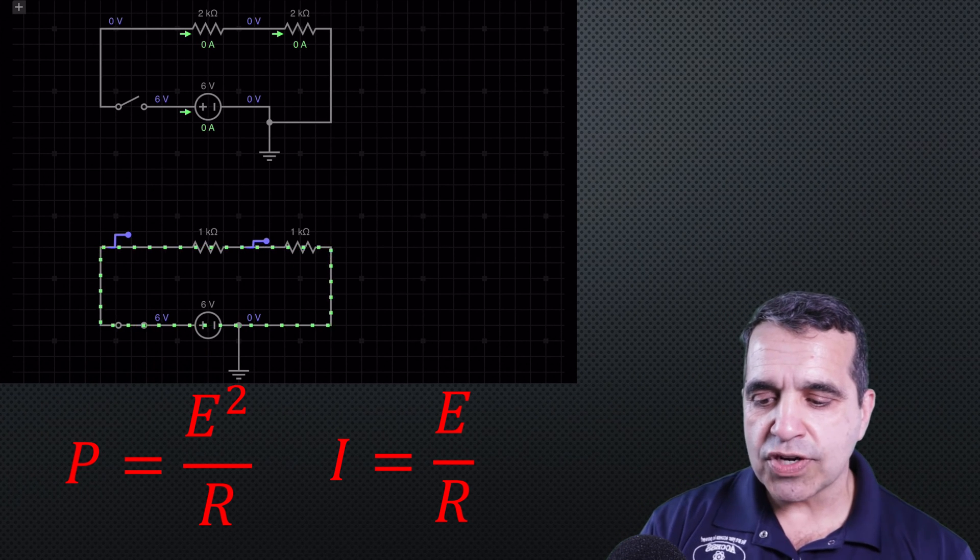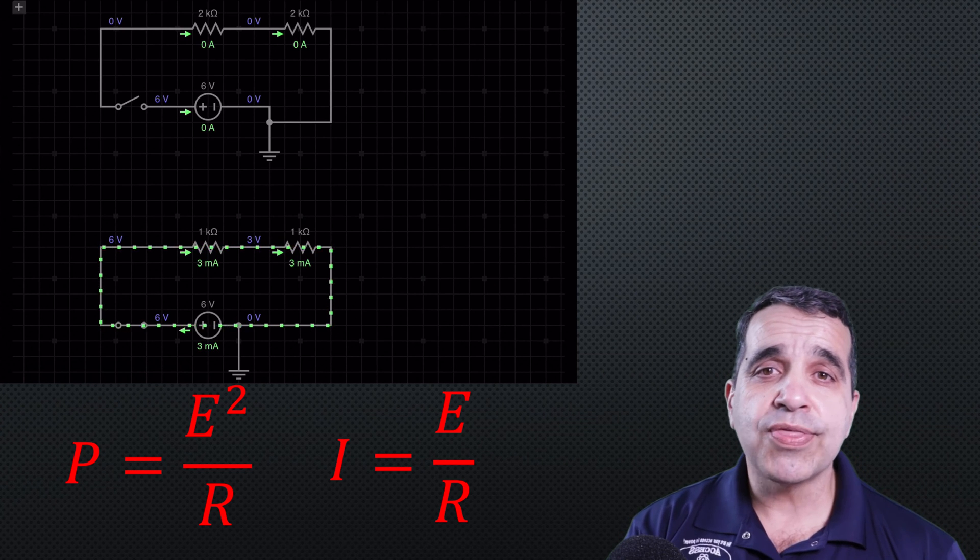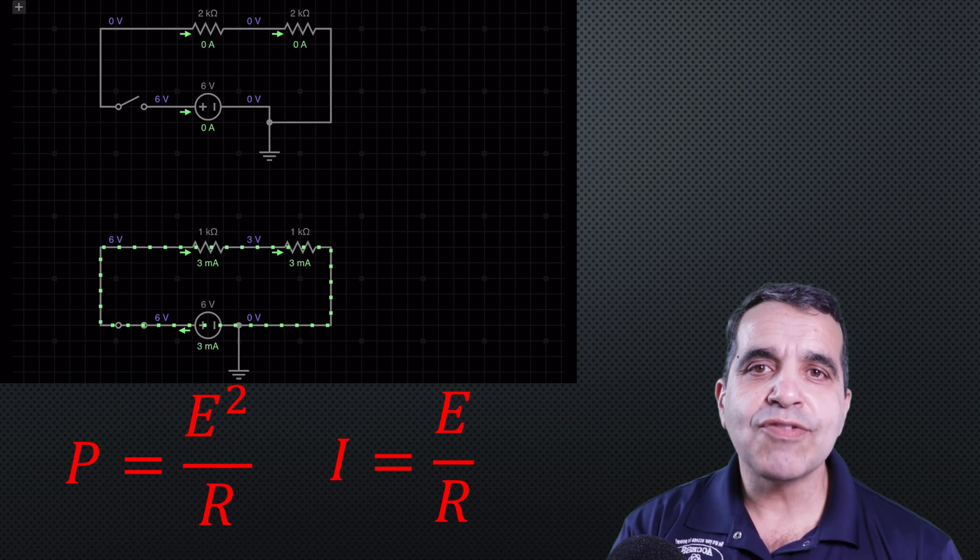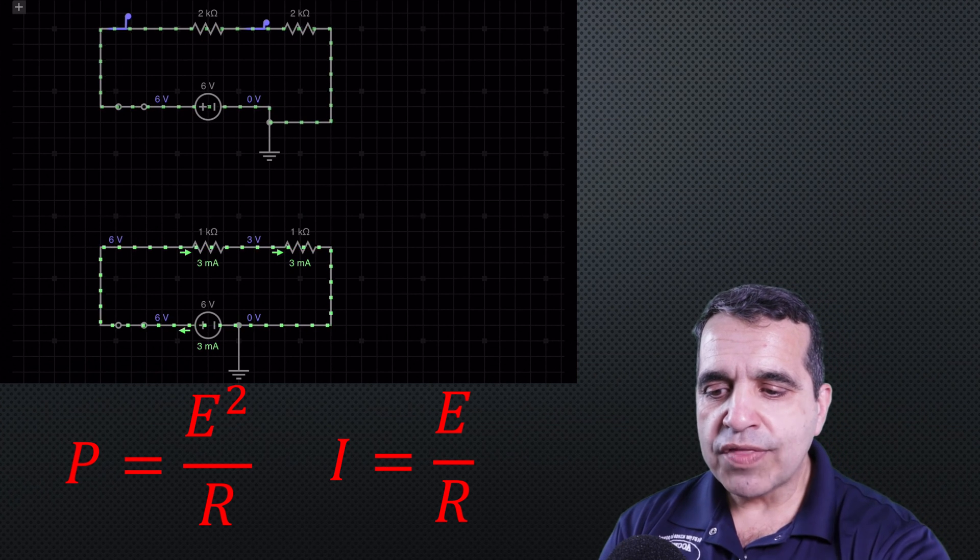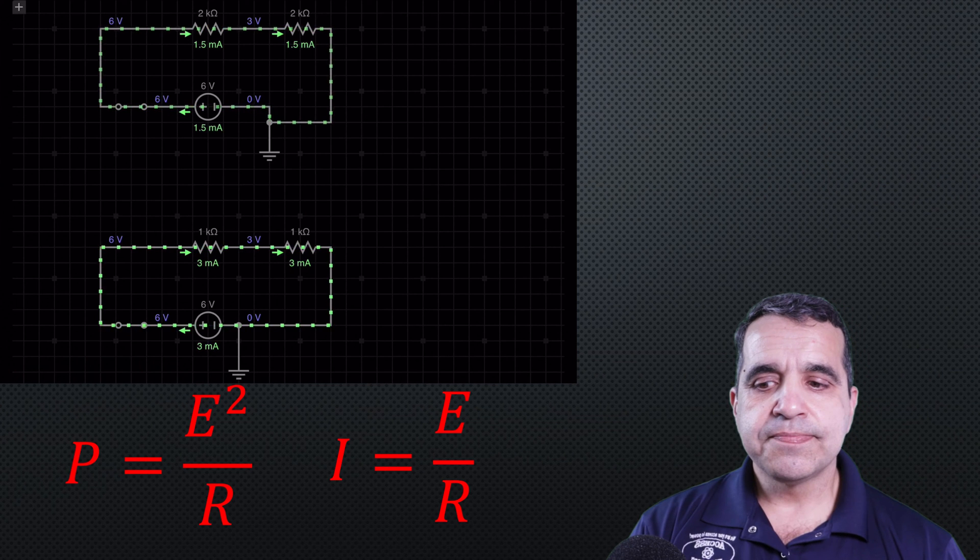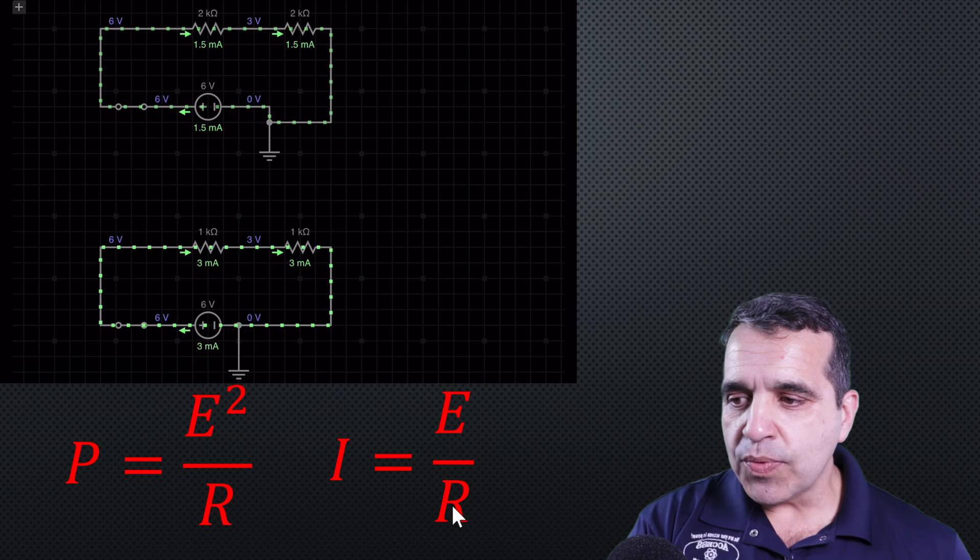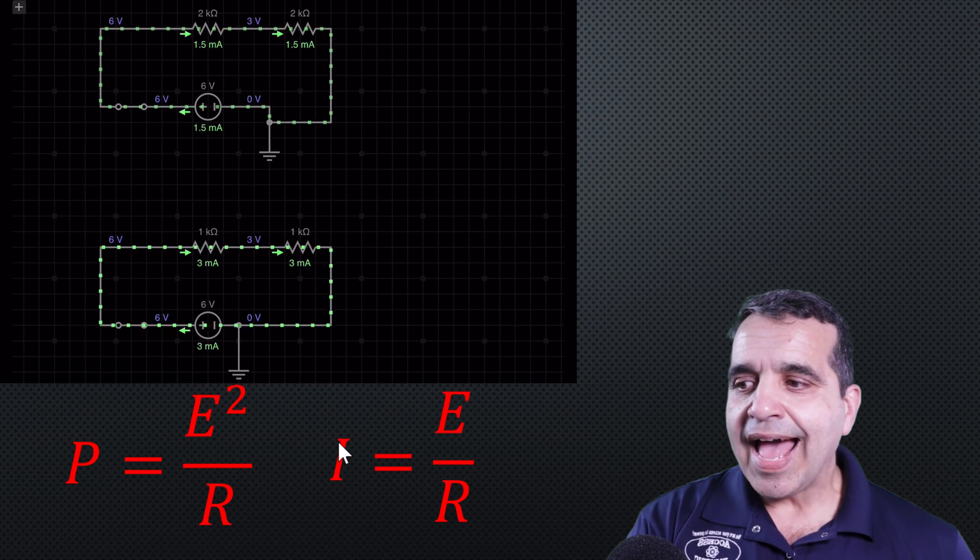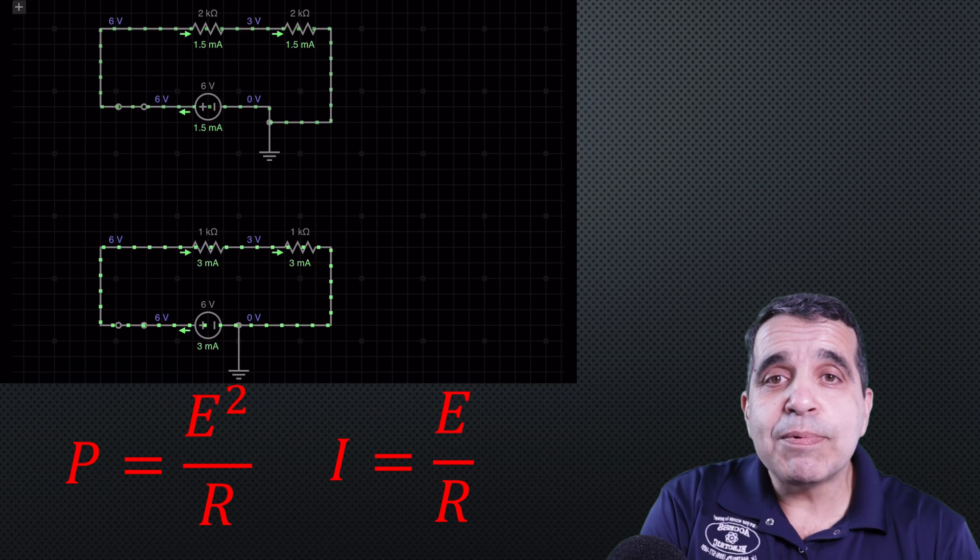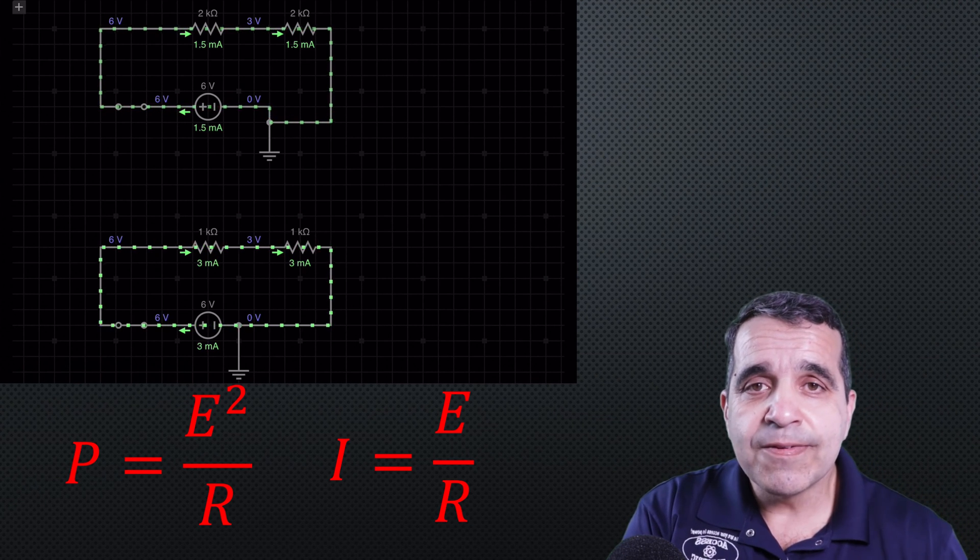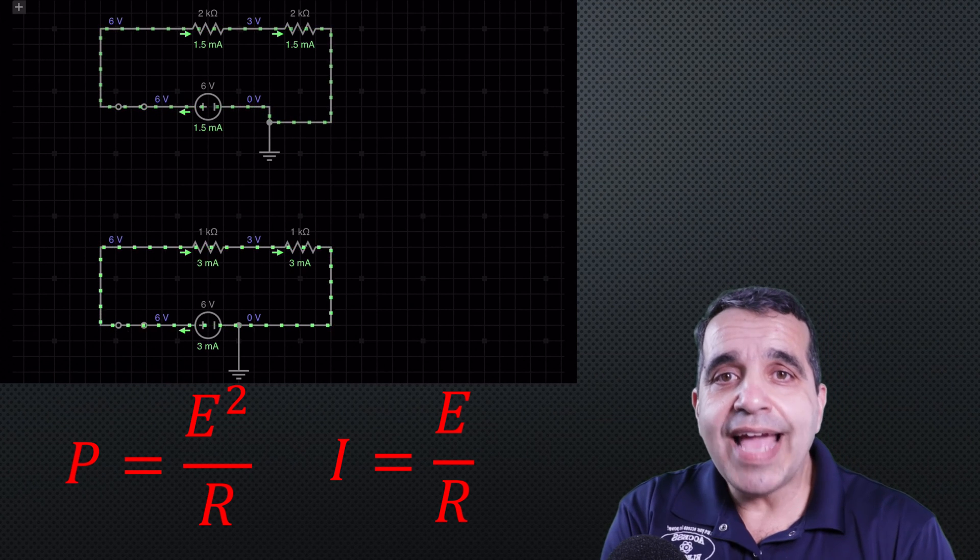Now, let me turn the power on the bottom circuit. And you can see that 6-volt power supply will push about 3 milliamps through that 2,000 ohms of resistance. Now, what happens with 4,000 ohms of resistance? You can see that if I double the resistance, I get half the amperage because amperage is inversely proportional to the resistance. So since I doubled the resistance, I got half the amperage.